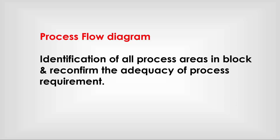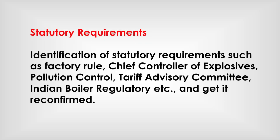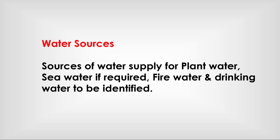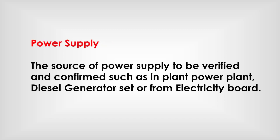Additional inputs include the process flow diagram and deviations of all process areas confirmed for adequacy. Statutory requirements such as factory rules, Chief Controller of Explosives, Pollution Control, Tariff Advisory Committee, and Indian Boiler Regulations must be identified and reconfirmed. Water sources — plant water, sea water if required, fire water, and drinking water — as well as the source of power supply such as in-plant power plant, diesel generator set, or electricity board supply, must all be verified and confirmed.